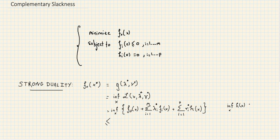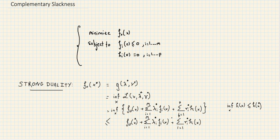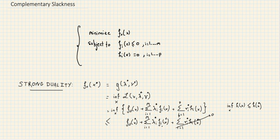Since this is the infimum over that quantity, it is always lower bounded by the same quantity evaluated at any particular point. We choose x*. Since x* is optimal and feasible, it satisfies the equality constraints — so those terms vanish. The fi(x*) terms are negative, and the Lagrange multipliers λi are always positive, so we're left with a lower bound of f0(x*).